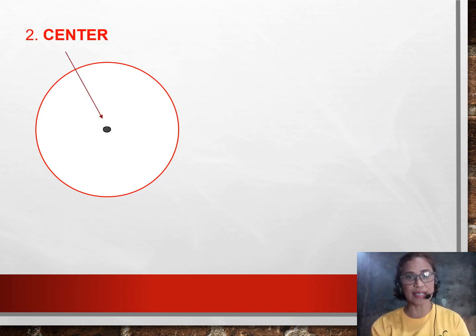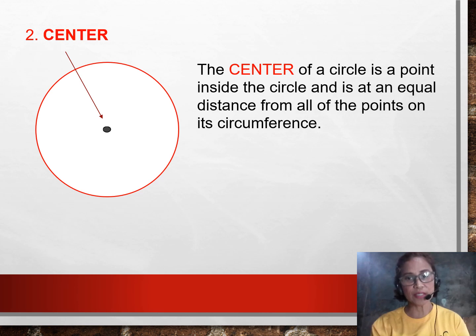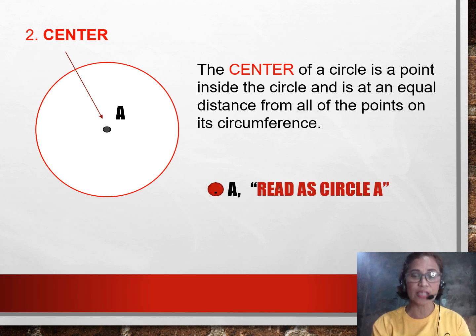Number two, the center. The center of a circle is a point inside the circle and is at an equal distance from all of the points on its circumference. So, if I'm going to place point A beside the center, this circle will now be called as Circle A. Every circle is named after its center. You have to affix the symbol of circle and then the letter beside the center, Circle A.